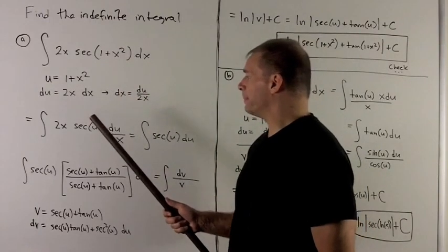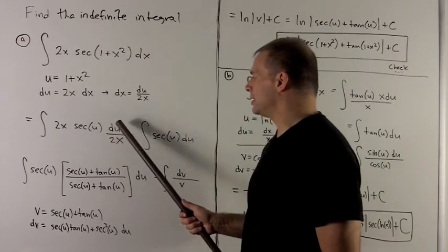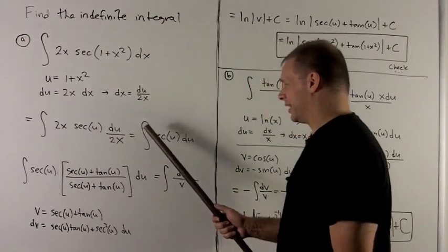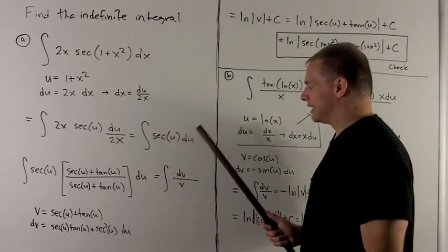We substitute in, I have sec(u), 2x stays in front, du over 2x. That gives me the integral of sec(u) du.